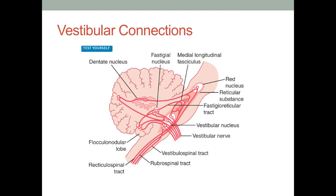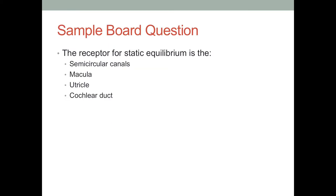The final slide looks at all of the integration of vestibulospinal and rubrospinal red nuclei tracks together, traveling down the lateral tracks in the brain. When I see you on Monday, you can answer this question: for static equilibrium — meaning if you are stationary — is it the semicircular canals, the macula, the utricle, or the cochlear duct? There's one really wrong answer, two that are kind of similar, and one that is the most correct. Good luck, everybody. I'll see you Monday.